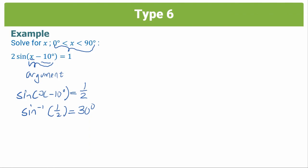So now for step three, we said we'll set the value of the argument. What's our argument? We said our argument was x - 10 degrees. We'll set that equal to the value we obtained from our calculator. So in this case, we got sine inverse of 1/2 was equal to 30 degrees.